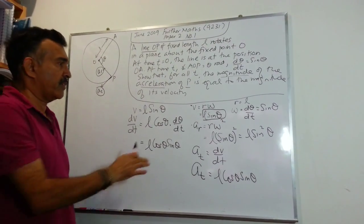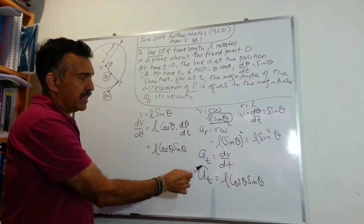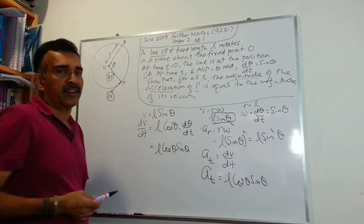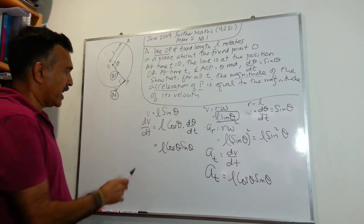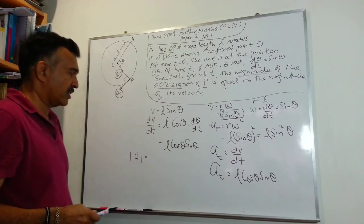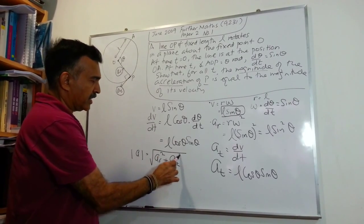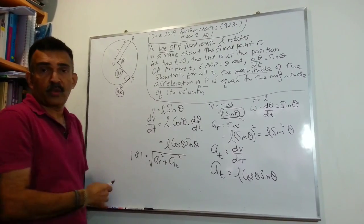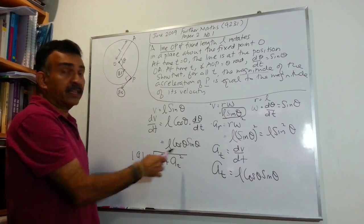The major portion of our work is done. We have the radial component A_r equals L sin²θ, and the tangential component A_t equals L cos θ sin θ. Since they are mutually perpendicular, we can use the Pythagorean theorem to find the magnitude of the acceleration: |a| equals the square root of A_r² plus A_t².